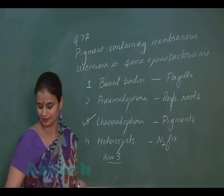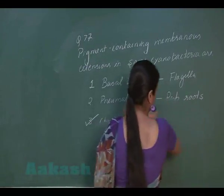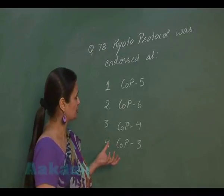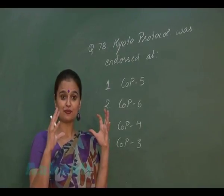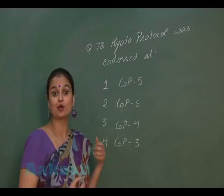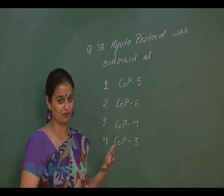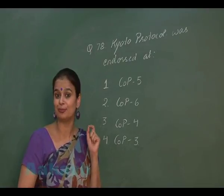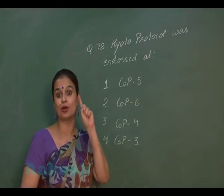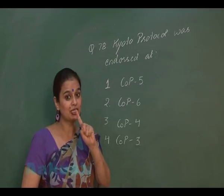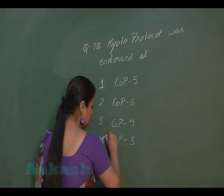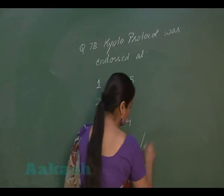In question number 78, we have to find when the Kyoto Protocol was endorsed. COP stands for Conference of the Parties. It was the third Conference of the Parties, held in Kyoto in 1997, when this protocol was created.